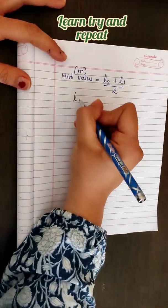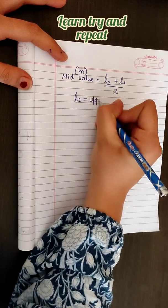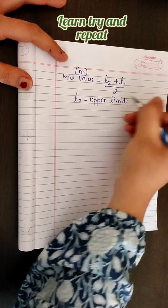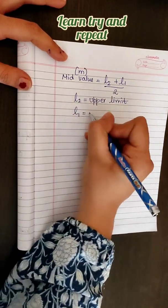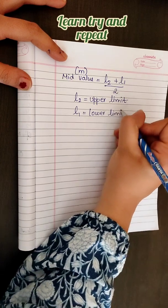L2 stands for the upper limit of the class interval, and L1 stands for the lower limit of the class interval.